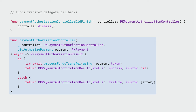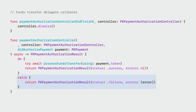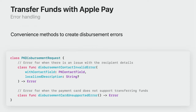Secondly, is the didAuthorizePayment delegate method. Because transfer funds with Apple Pay uses the same infrastructure as payments, you'll receive the same type of PKPayment object to use for processing. Here, we've abstracted the processing of the token away into our own ProcessFundsTransfer method. Depending on the result of processing, you would either return a success or failure.